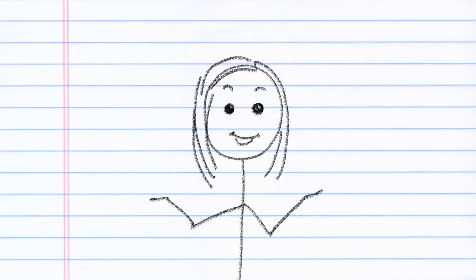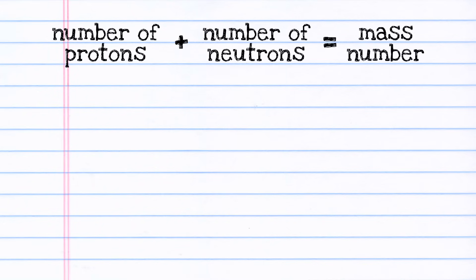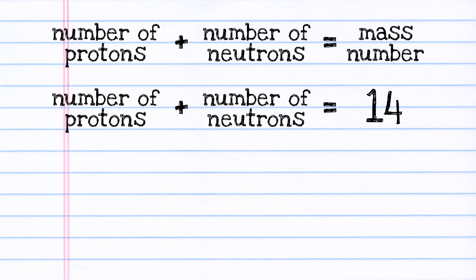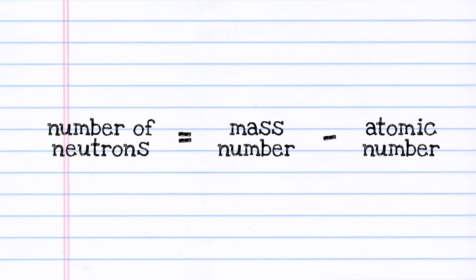If you've ever heard of carbon-14 or lead-210, then you've seen mass numbers in use before. The mass number tells us the total number of protons and neutrons in an atom. When we round nitrogen's atomic weight, we get 14. So, we know our drawing is going to have a total of 14 protons and neutrons. But we already know that every atom of nitrogen has exactly 7 protons. So, if our atom needs a total of 14 protons and neutrons, and it must have exactly 7 protons, then the remaining 7 particles are neutrons. In short, the number of neutrons is equal to the mass number minus the atomic number.